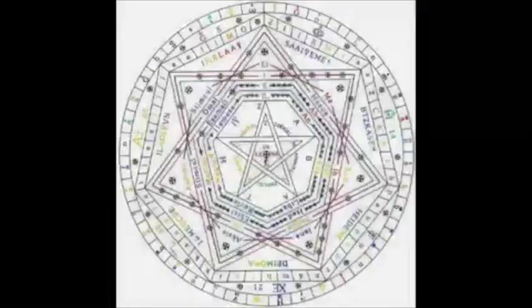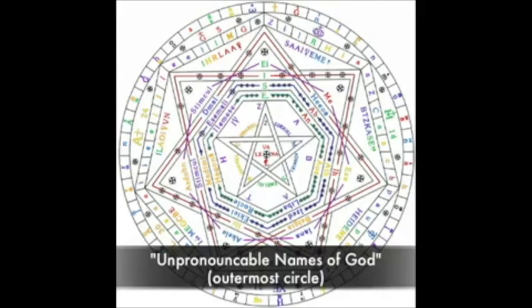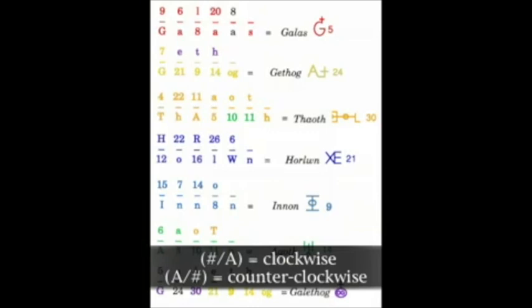And in the next section we will discuss in brief the derivation of the unpronounceable names of God through a rotation of the external ring, either clockwise or counterclockwise.